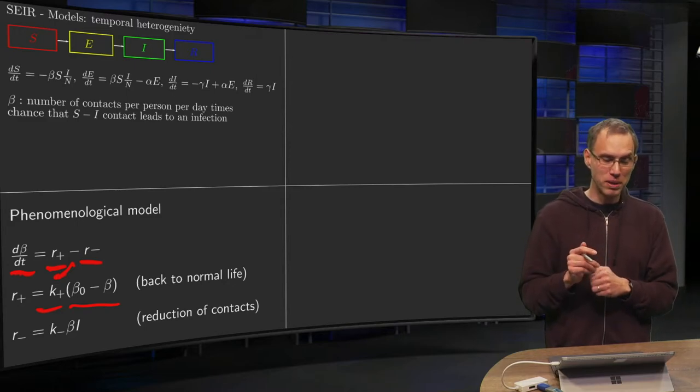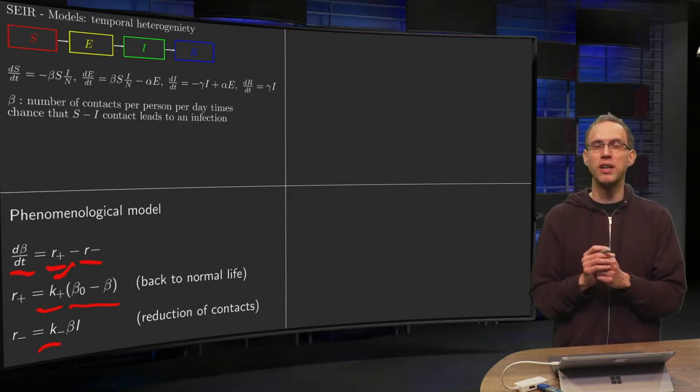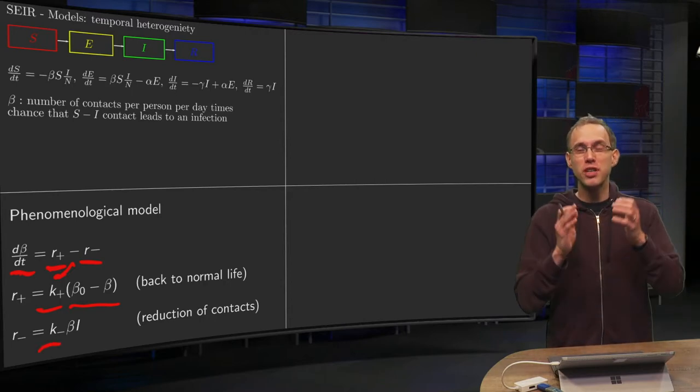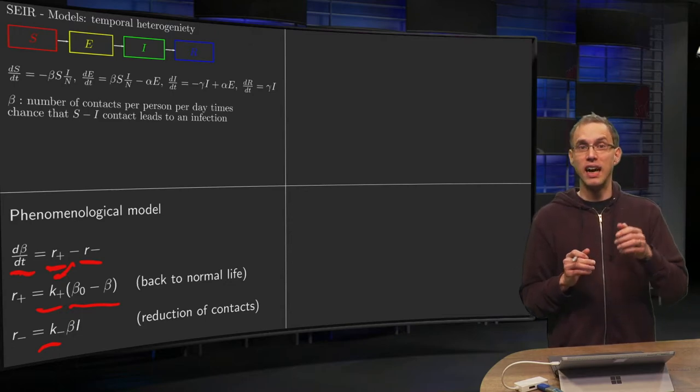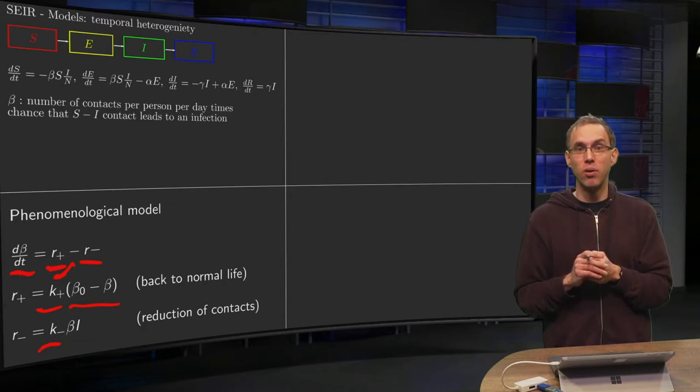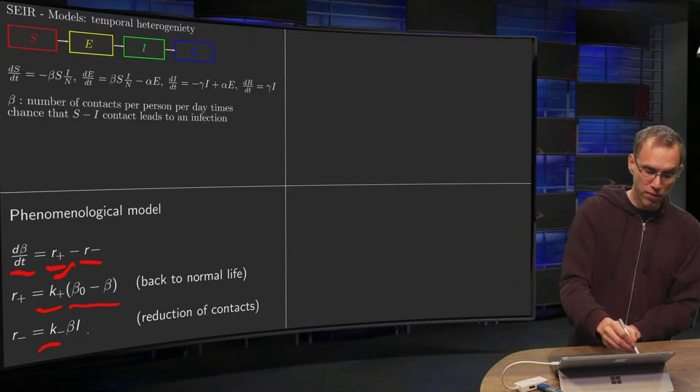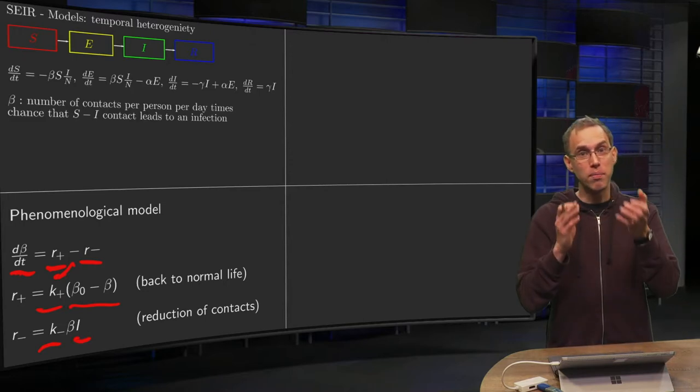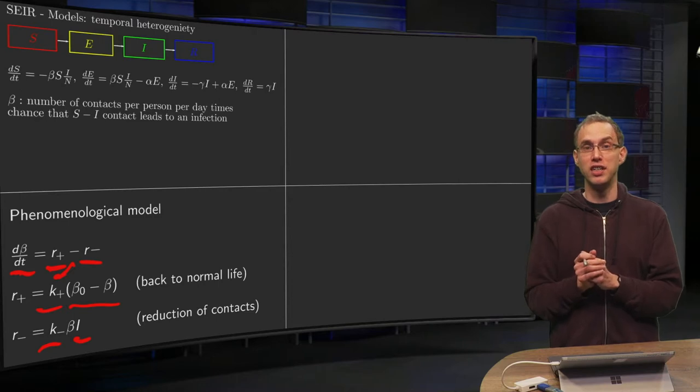The r minus term is also interesting. We put a constant k-, and then we say: as soon as there are lots of infections, people get worried and lower their number of contacts. Or the government gets worried and puts measures in place. So we put r minus proportional to I—if there are more infections, then beta decreases faster.